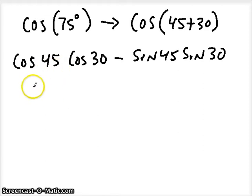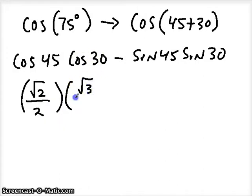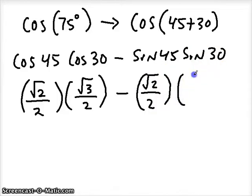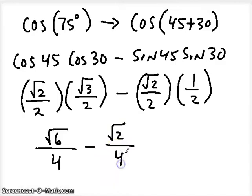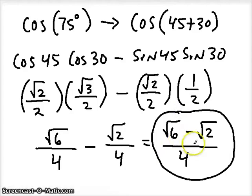Cosine of 45 is the x value, that's square root of 2 over 2. Multiply that by cosine of 30, which is the x value of a 30 degree angle, square root of 3 over 2. Sine of 45 is the y value, square root of 2 over 2. Sine of 30 is the y value, that's 1 half. Multiplying the radicals: 2 times 3 gives square root of 6, with 4 on the bottom. Square root of 2 times 1 is square root of 2, with 4 on the bottom. Because these two fractions have a common denominator, I can rewrite the numerators with one denominator. I'll leave it in this ratio form.